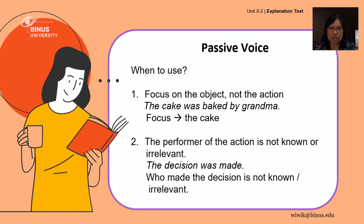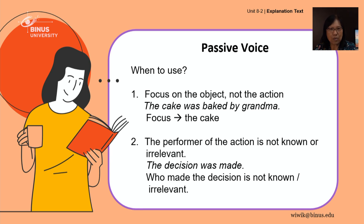To review when we use passive construction: the first reason is if you focus on the object, not the action. The second reason is when the performer of the action is not known or irrelevant.